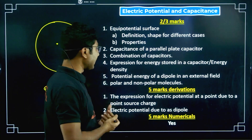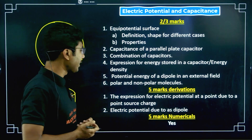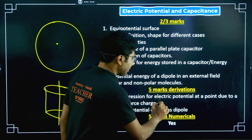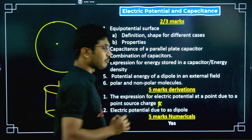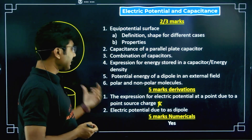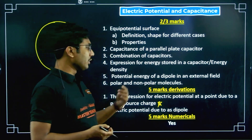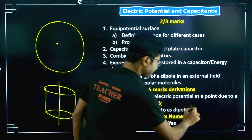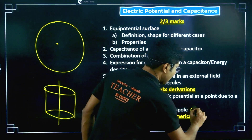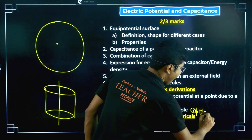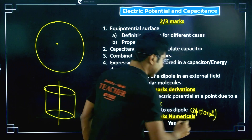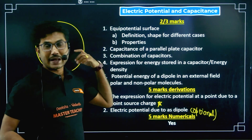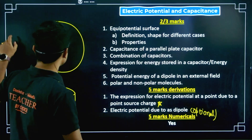The expression for electric potential at a point due to a point source charge comes almost every year, so this is a very very important derivation. Electric potential due to a dipole — if you get time, practice this; it is optional. Five-mark numerical questions can also come from this chapter, so you have to practice numericals from this chapter as well.